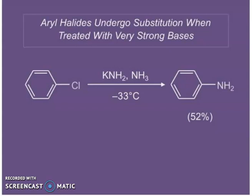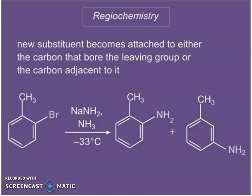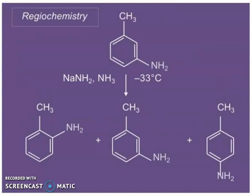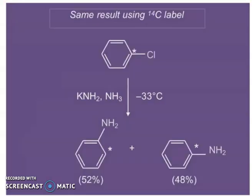Regioselectivity: the new substituent becomes attached to either the carbon that bore the leaving group or the carbon adjacent to it. You can see ortho, meta and para products. Using carbon-14 labeling, you label the carbon directly attached to chlorine.